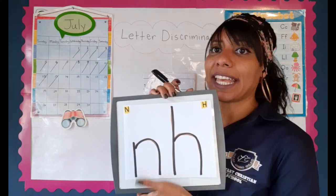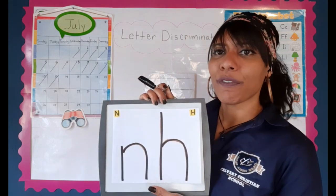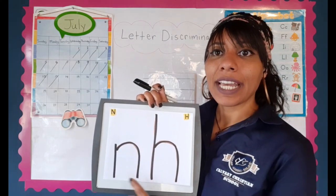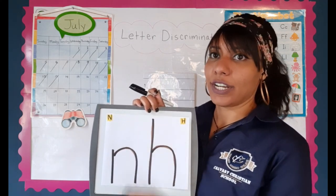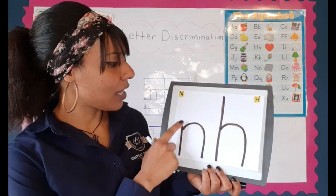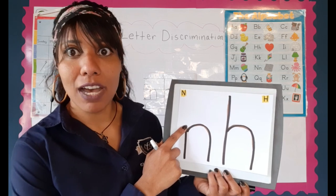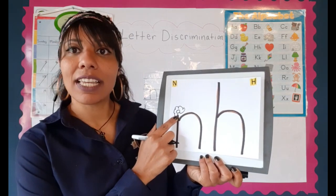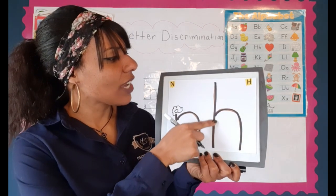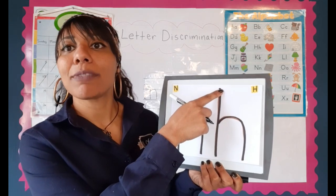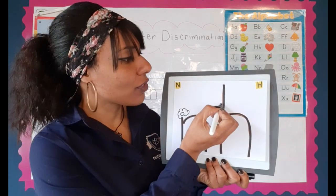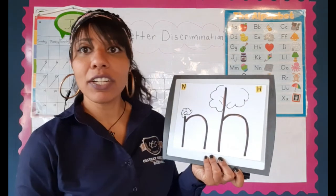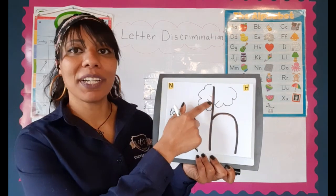Let's begin with the letter N and the letter H. The first thing we notice about N is that the stick is shorter, and the stick for H is longer. Because N has a smaller stem, it makes me think of a flower — so here I'm going to draw a small flower. Because H has a big trunk, it makes me think of a tree — so here I'm going to draw a beautiful tree. Later on we can color our flower and our tree.